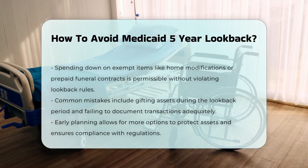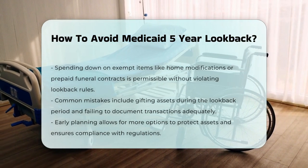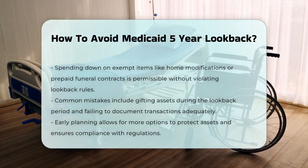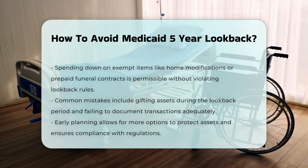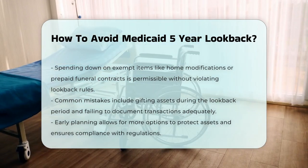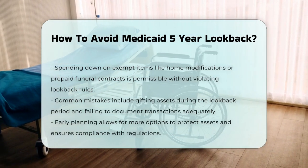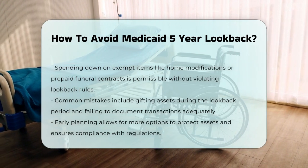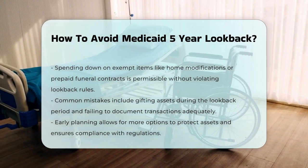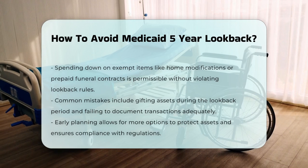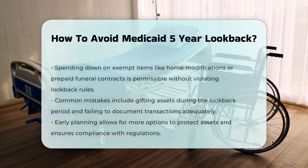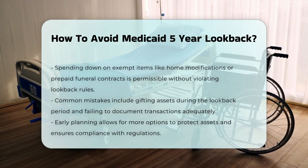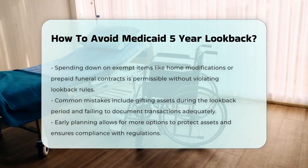Common mistakes to avoid. First, gifting assets — annual gifts of $15,000, while exempt from gift and estate taxes, are not exempt under Medicaid look-back guidelines. Avoid making gifts during the look-back period. Second, lack of documentation — ensure all transactions are well-documented to avoid penalties for transactions that could be misinterpreted as gifts or transfers for less-than-fair market value. Third, start planning early. Starting the planning process well before needing long-term care gives you more options to protect your assets and avoid penalties.